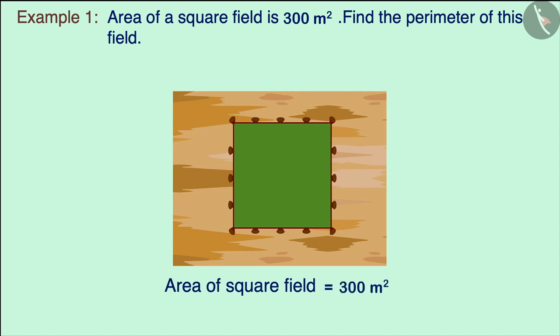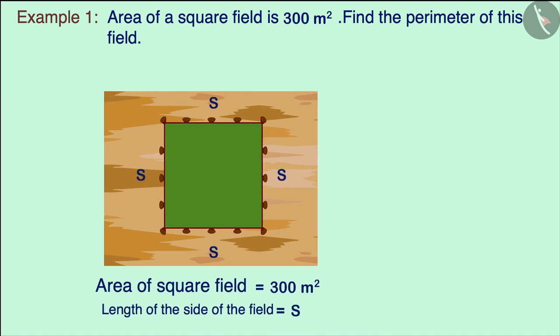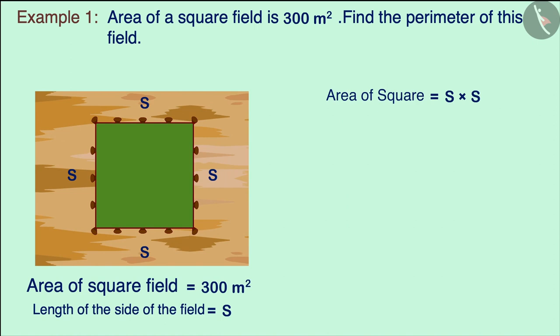We have been given that the area of this square field is 300 square meters. If we assume the length of the side of this square field to be s, then according to the formula of the area of a square, it will be equal to s square, which will be equal to 300 square meters.